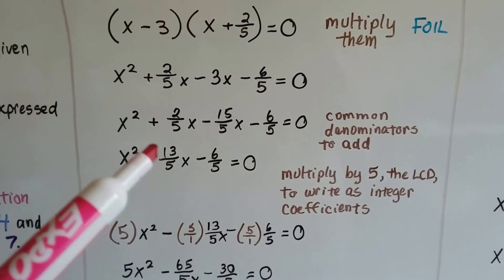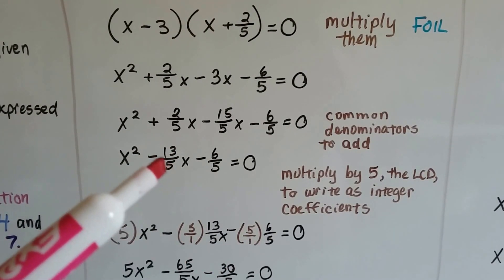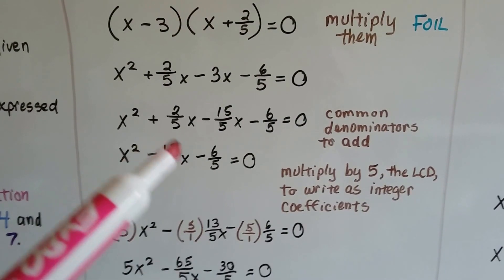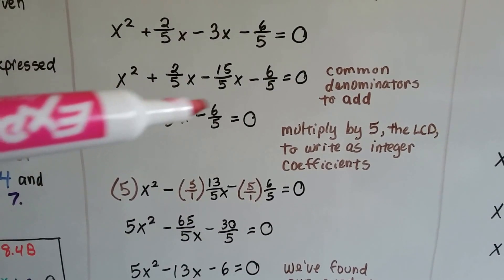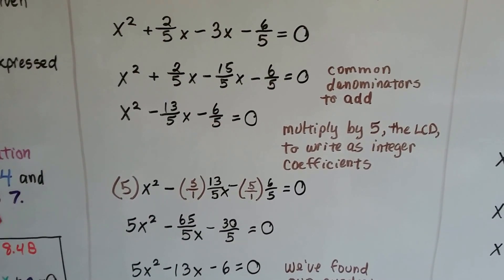Now, as we said in the last video, we don't usually leave it this way. We usually write them as integer coefficients and get rid of these fractions. So we can multiply every single term by 5, which is the least common denominator.